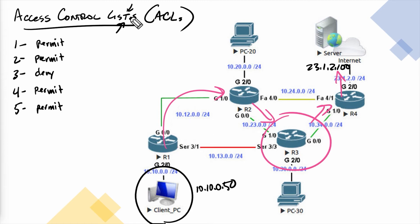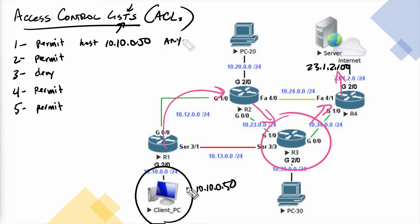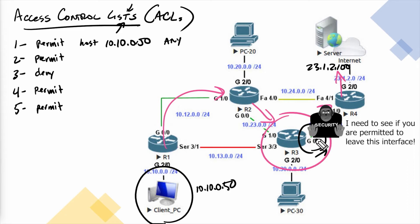If we choose to use an access control list to control what traffic is allowed through the network, we could say for line number one: permit all traffic from 10.10.0.50 going anywhere — using the keyword 'any' for the destination. An access control list can be applied to an individual interface. Think of it like a bouncer at the door — going down the list starting at line one, checking for a match, and when it finds one, it takes the action to permit or deny that traffic.